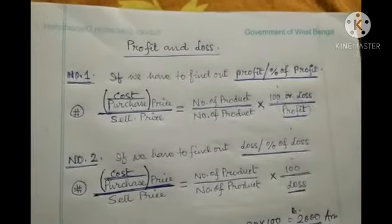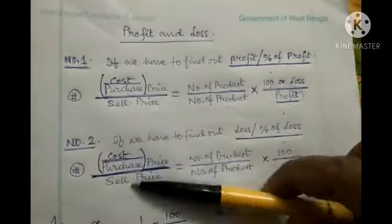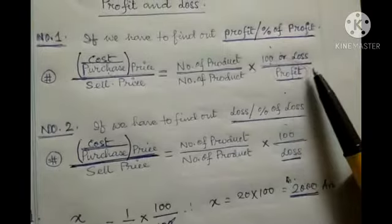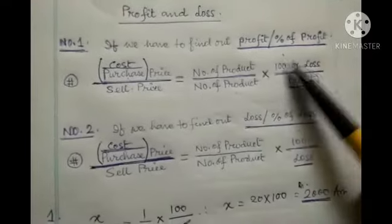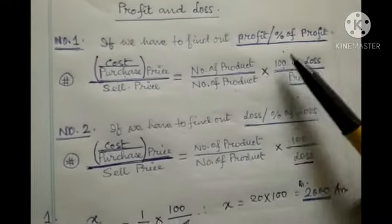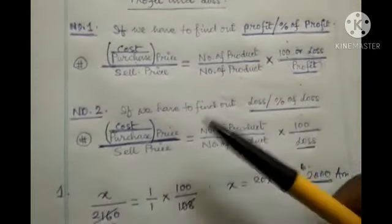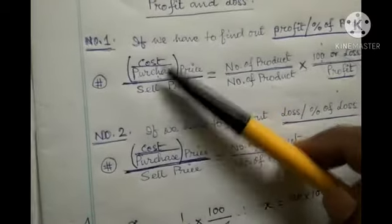Today I shall tell you the tricks for calculating profit and loss problems. We have two formulas: Formula 1 and Formula 2. Formula 1 is used when we have to find the sale price or cost price and profit is given in the problem. Formula 2 is used when loss is given in the problem.